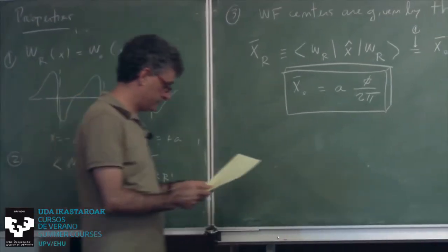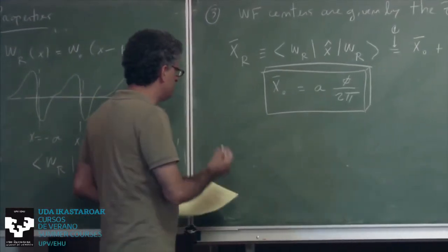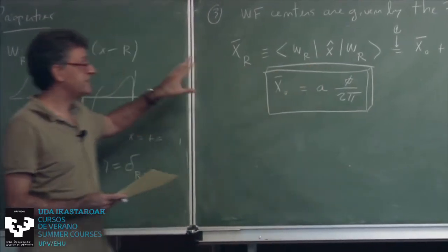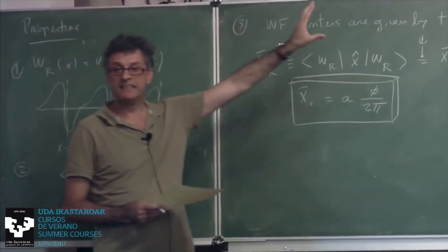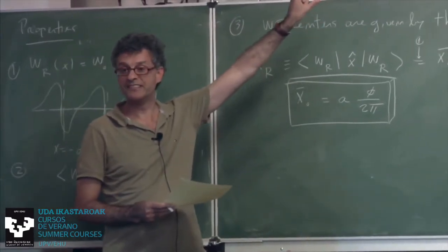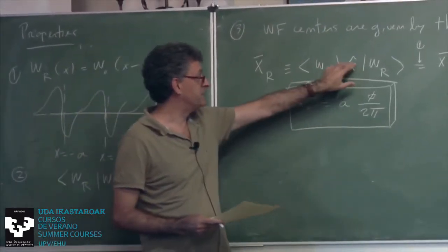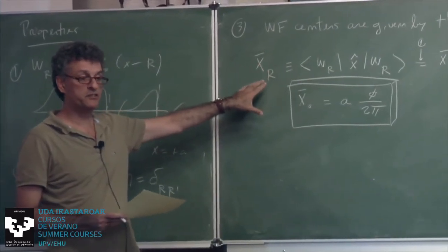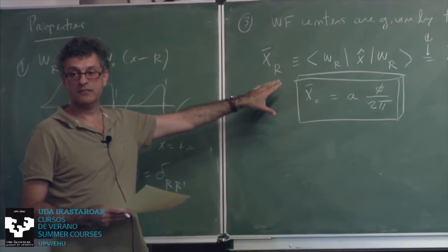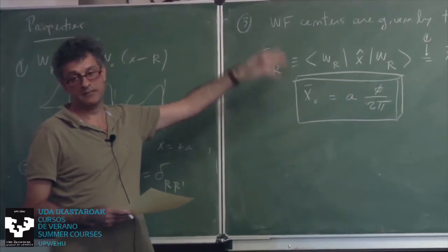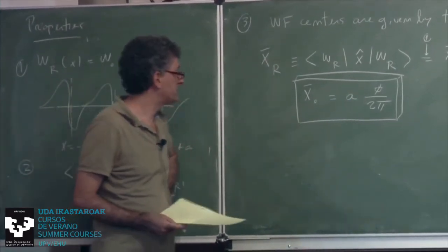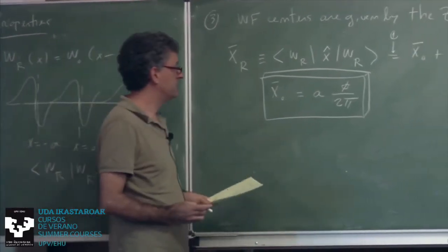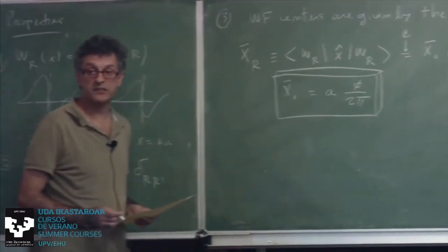So what is the physics behind this? This comes back to what I said before: the Zak phase is special in that the position operator appears. Here it appears again, but in a much more transparent way — it is actually the first moment of the charge distribution of a Wannier function, i.e., the center. So that's the special spatial information that is encoded.